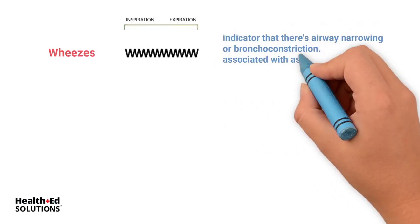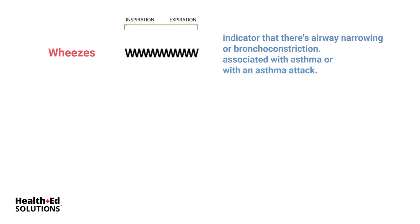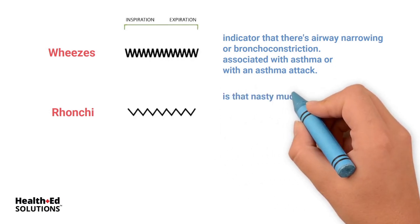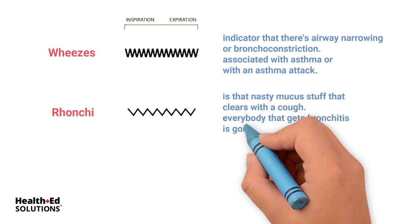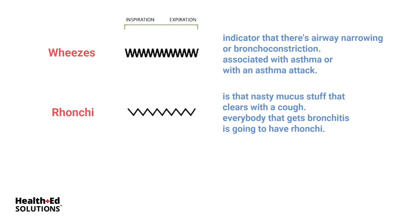Wheezes are an indicator of airway narrowing or bronchoconstriction — most often we associate wheezing with an asthma attack. Ronchi — we've all had ronchi before. If you've ever had bronchitis and a cough, that's ronchi. It's that nasty mucus sound that does clear with a cough. Everybody that gets bronchitis is going to have ronchi.